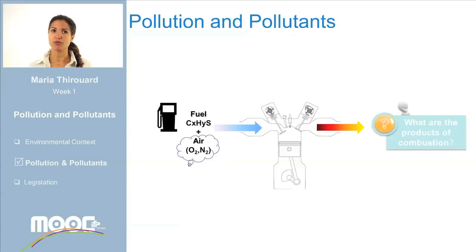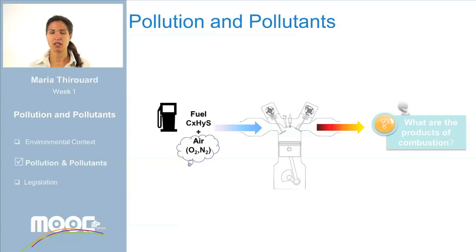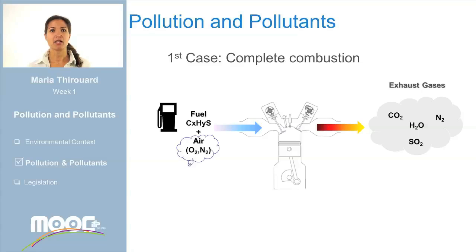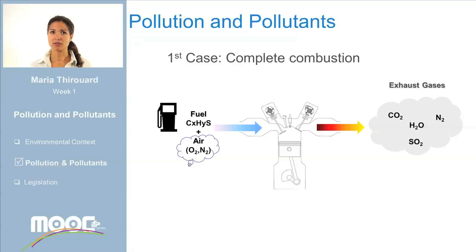In thermal engines, the fuel reacts with the air during combustion. The air, as you know, is mainly composed of nitrogen and oxygen. So, what are the products of combustion? Well, there are quite a few. If combustion is complete, then carbon dioxide, nitrogen and water are produced. If the fuel contains sulfur, then the sulfur reacts with oxygen to produce sulfur dioxide, or SO2.